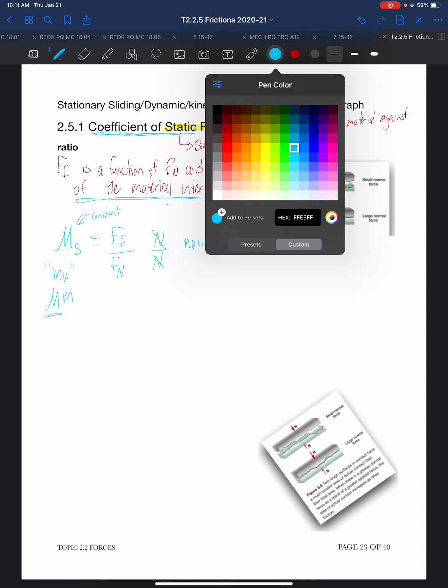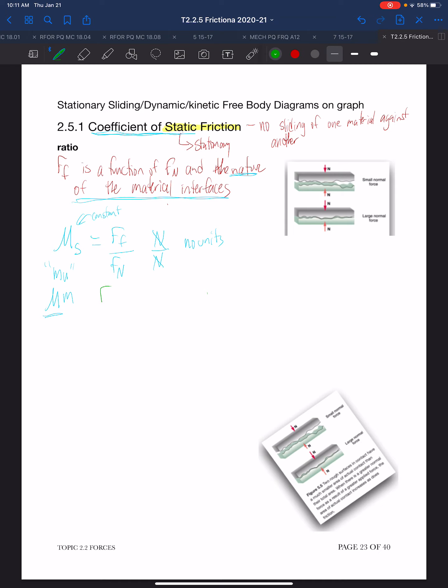Rearranging this equation, we can come to force of friction is mu static times the force normal, and that would be the force of friction static. This is a linear relationship, and it is also direct. If I double the force normal, I need to double the force friction. Whatever happens to one happens to the other. And this is the coefficient of static friction.